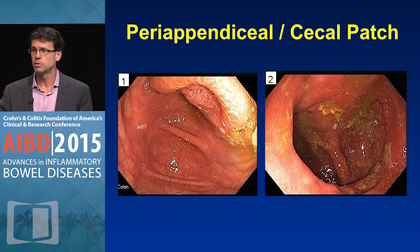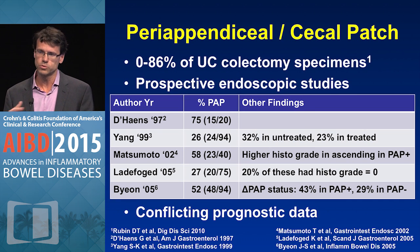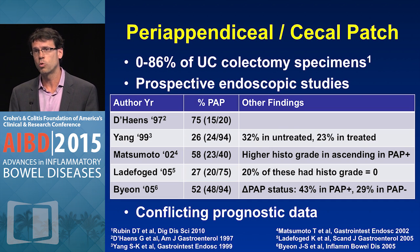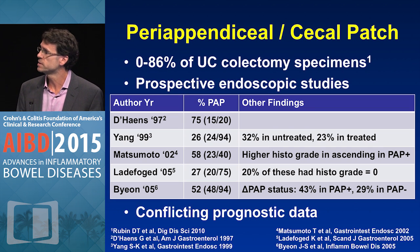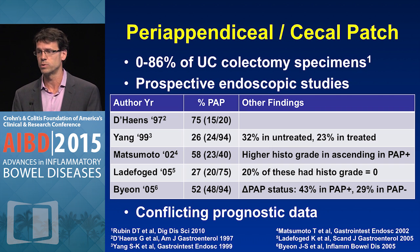How about the peri-appendiceal — or less commonly cecal — patch, or even the ascending colon patch? In colectomy studies, there's a wide range of frequencies reported, typically around the 30% range. In prospective endoscopic studies, it's seen in anywhere between one quarter and three quarters of patients. Interestingly, it can appear in both untreated and treated disease, and a patient's status of having a peri-appendiceal patch can change over time. There's also conflicting prognostic data as to what this means.